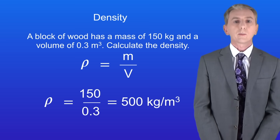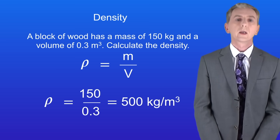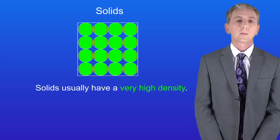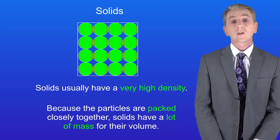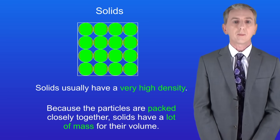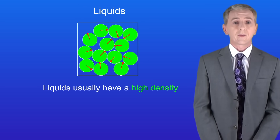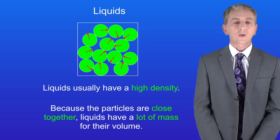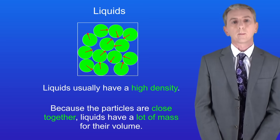We can use the particle models we saw earlier to explain the density of different materials. Solids usually have a very high density because the particles are packed closely together, so solids have a lot of mass for their volume. Liquids also usually have a high density — again because the particles are close together, liquids have a lot of mass for their volume.